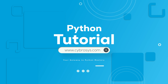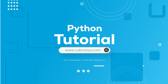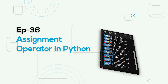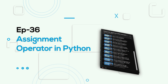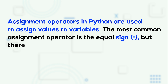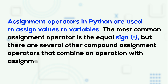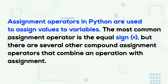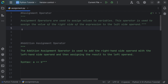Welcome back to a new series of Pivot. In today's video we will discuss assignment operators. Assignment operators are used to assign values to a variable — specifically, to assign the value of the right side of an expression to the left side operand.